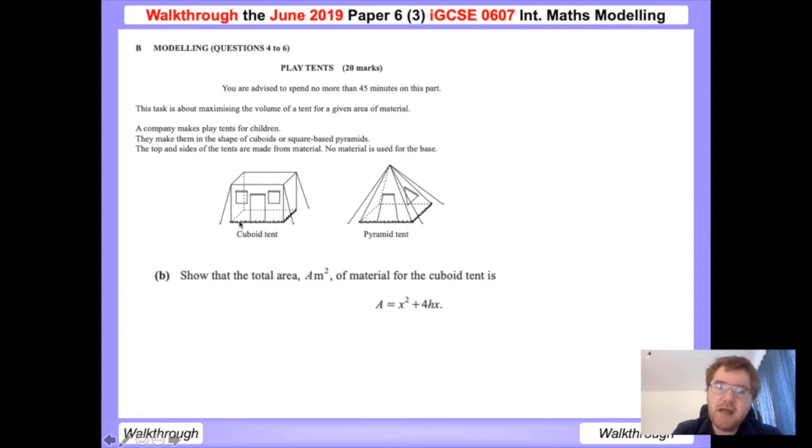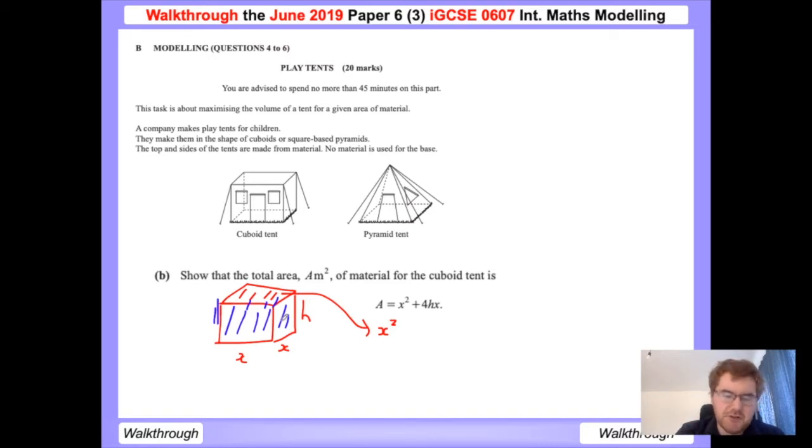The next part shows the total area of material used, not including the bottom. So I'm going to work out each of the individual faces. I'll draw a quick sketch where this is x, this is x, and this is h. The top of my tent is going to be x times x, that's x squared. Now I'm going to think about the other faces. The blue faces all have the same dimensions, x times h. How many sides are in blue? One, two, three, four.